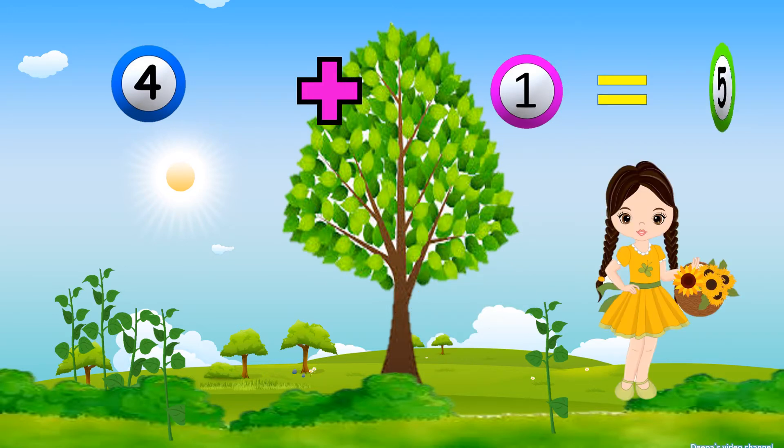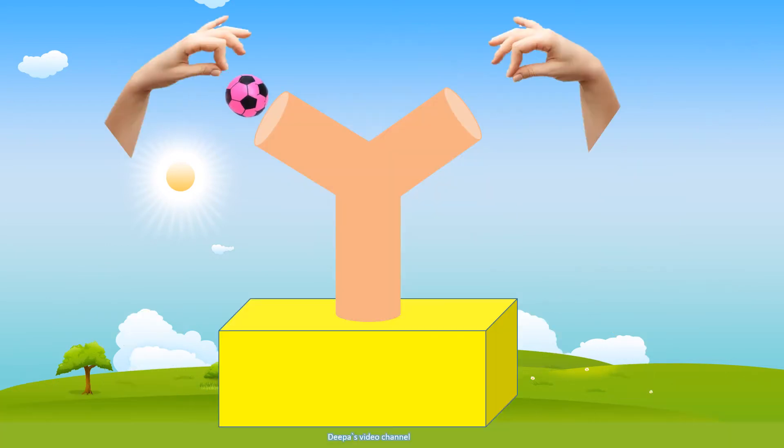Now the girl has one, two, three, four, five—five flowers in her basket.